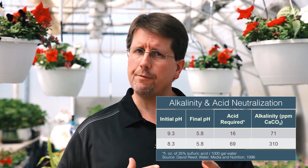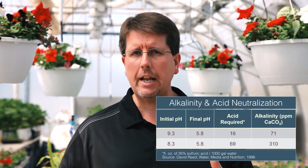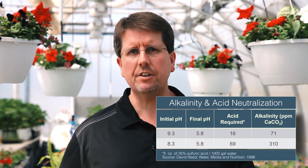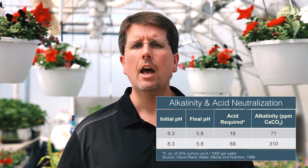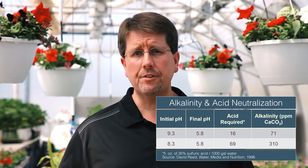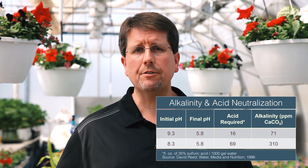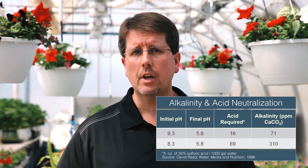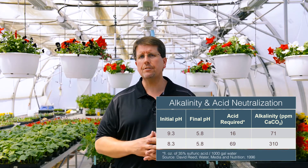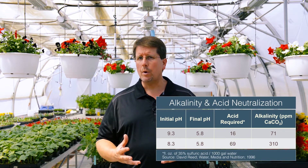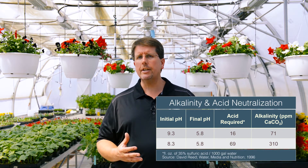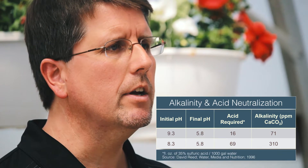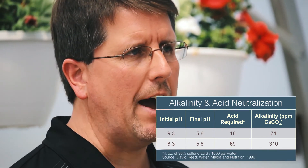We add sulfuric acid to bring down the pH of both water sources to 5.8, but notice that the amount of acid required is four times different. In the first water source, you're bringing it down 3.5 units from 9.3 to 5.8, requiring 16 ounces of acid. In the second one, it requires 69 ounces to drop just 2.5 pH units. Looking at the alkalinity column, we can see that the alkalinity of the water directly relates to the amount of acid required to bring the pH of that water down to 5.8.